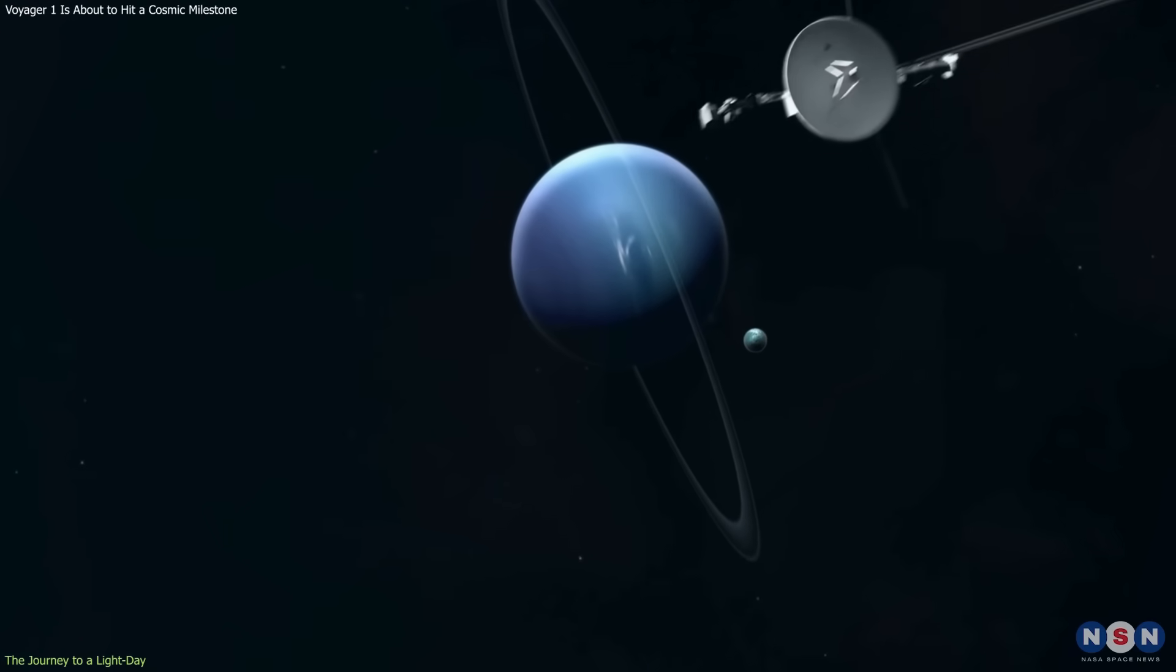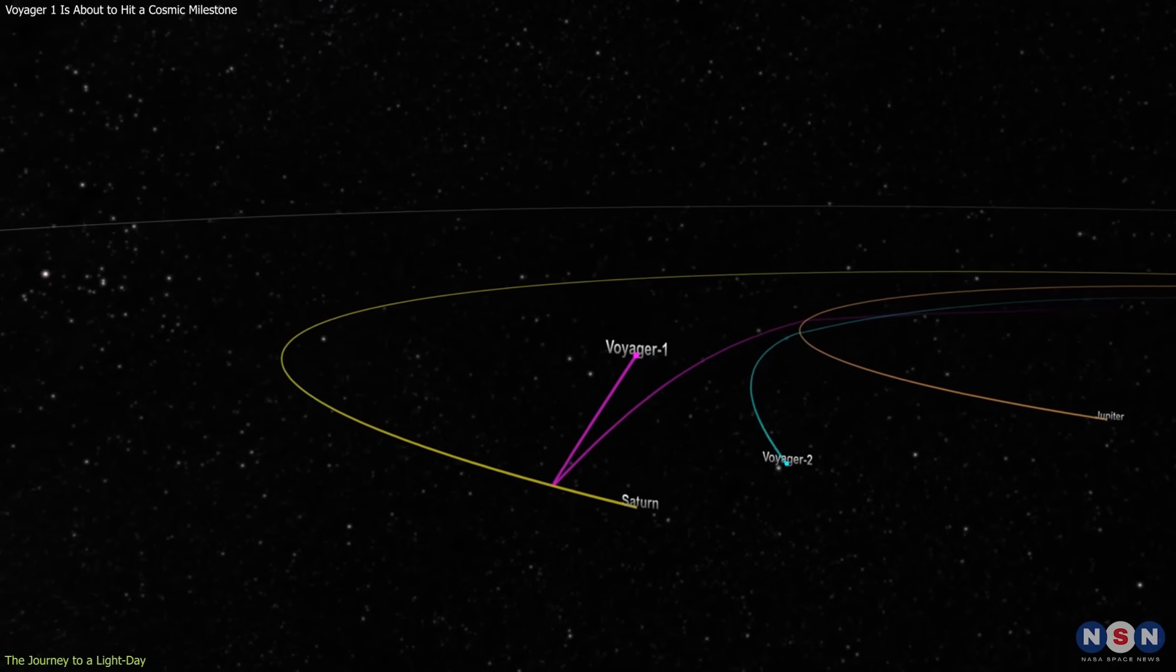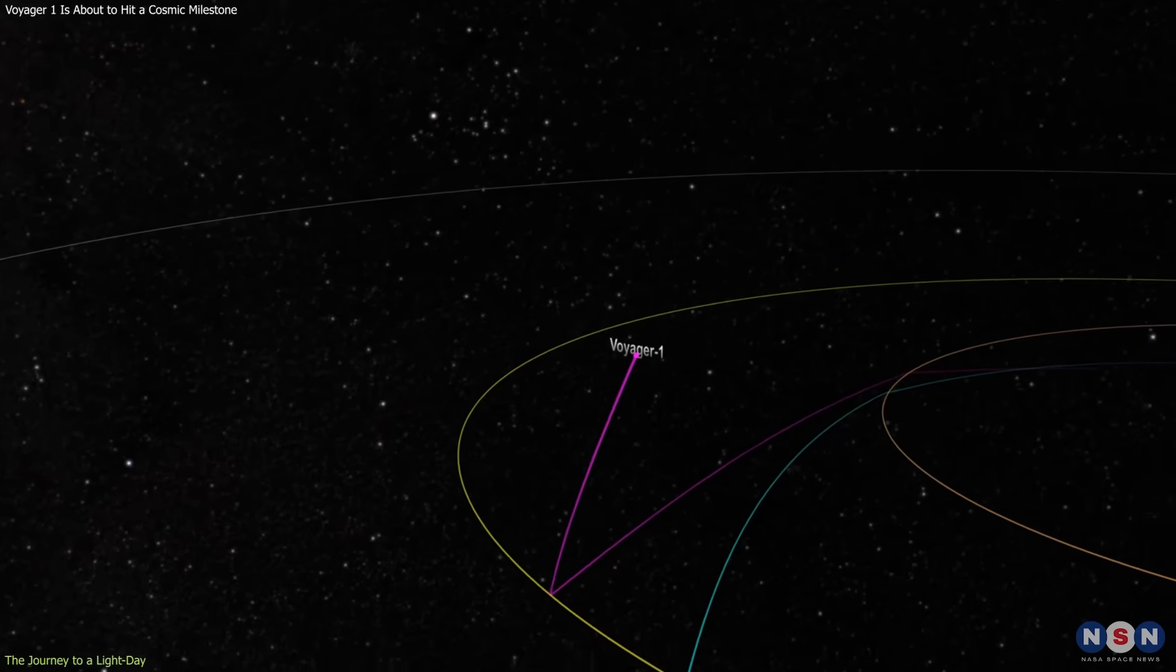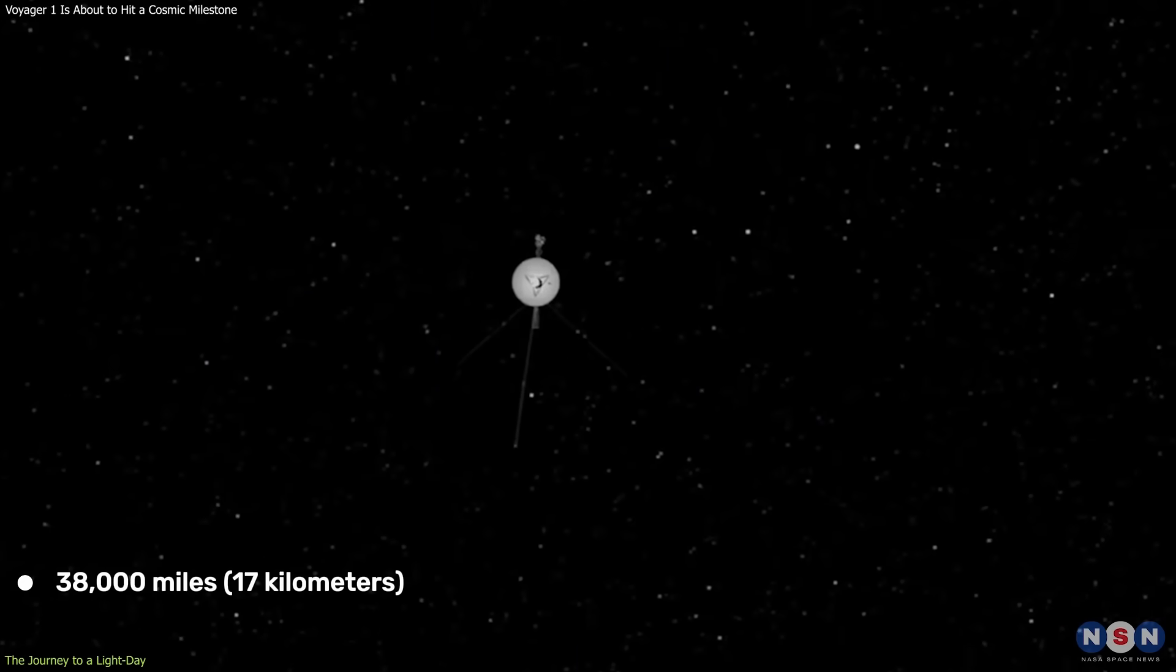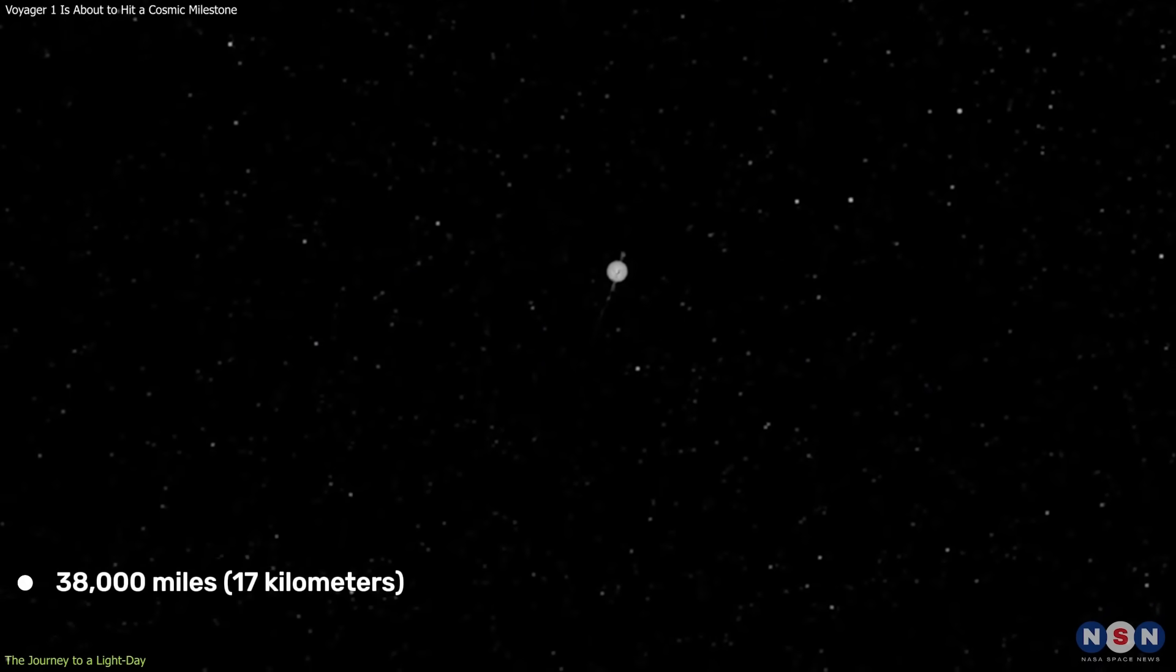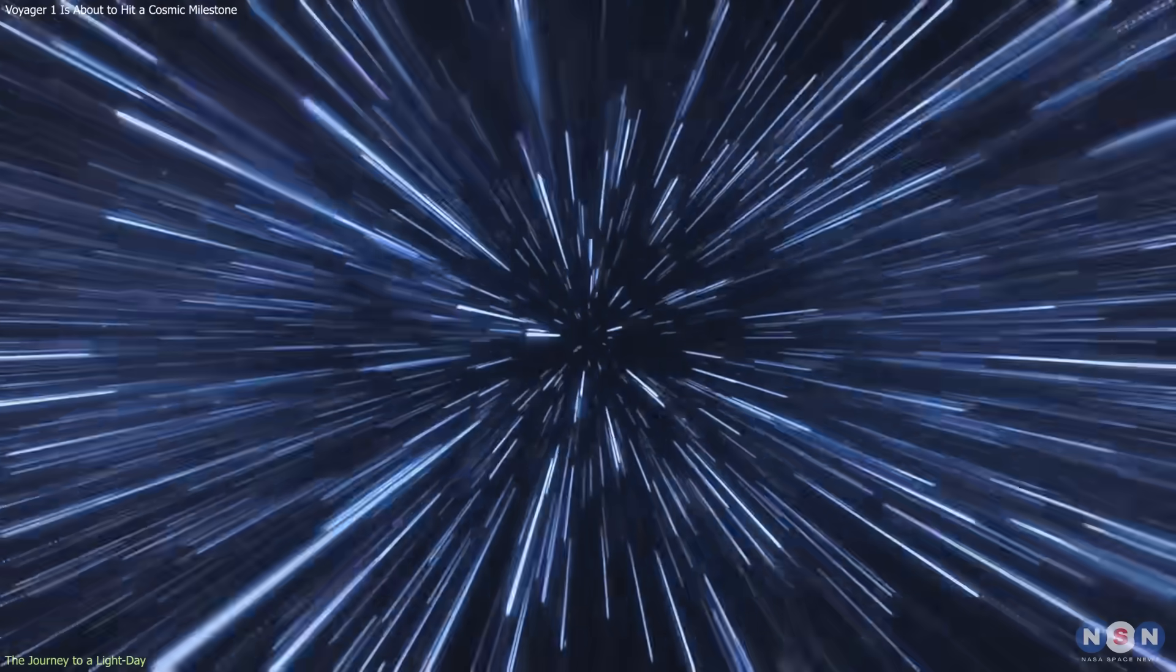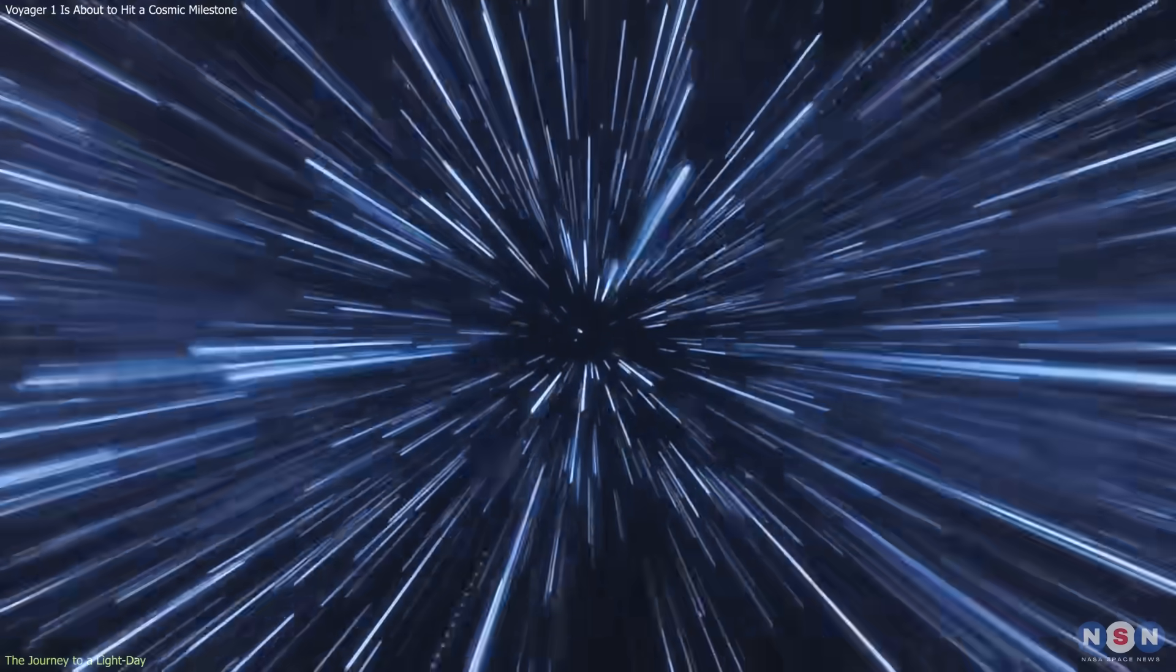After completing its planetary mission, Voyager 1 took a faster, steeper trajectory out of the ecliptic plane. It now travels at about 38,000 miles per hour, 17 kilometers per second, fast by human standards, yet a crawl compared to light's 186,000 miles per second.